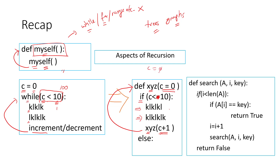Similarly, c starts at 0, then becomes 1, then 2. When c becomes 2, 2 is less than 10 — definitely. So we do the work, call xyz again with 2 plus 1 = 3. This continues. When c will be equal to 10, 10 is not less than 10 — they are equal. Therefore our if condition will not be satisfied. Then we go to else. But else has nothing in it — which means there is an invisible return, which means the end of the function. End of function means no recursive call, therefore no more loop. So that is the end.